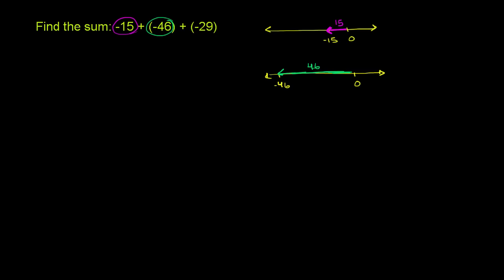Finally, let's do the same thing for negative 29. Let me draw my number line. Zero is here, and negative 29 is roughly over here. Negative 29 is exactly 29 away from 0, so this length is 29, and it is to the left — that is why it is negative 29. If it were positive 29, it would be 29 to the right of 0.